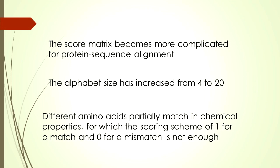The score matrix becomes more complicated for protein sequence alignment. Why? There are two reasons. First, the alphabet size has increased from 4 to 20 — in DNA there are only 4 bases, but in protein there are 20 amino acids. The second reason is that for proteins, the scoring scheme of 1 for a match and 0 for a mismatch is not enough.